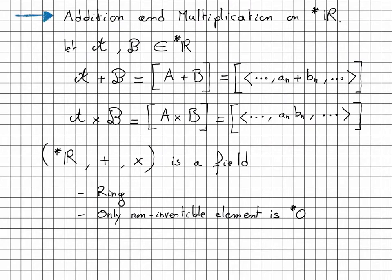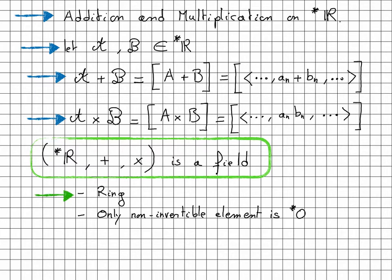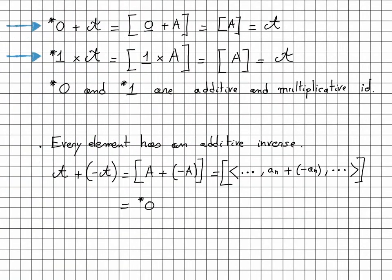We can now define addition and multiplication on star-R. For curly-A and curly-B in star-R, we define curly-A + curly-B as the equivalence class of the sum sequence A+B, and curly-A × curly-B as the equivalence class of the product sequence A×B. We observe that star-R under addition and multiplication forms a field — it is a ring, and on top of that it has only one non-invertible element, which is star-0. Star-0 and star-1 serve as the additive and multiplicative identity.